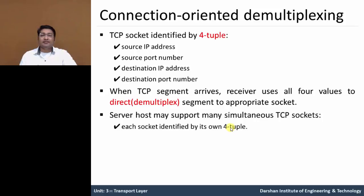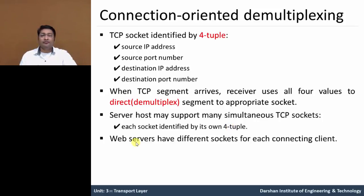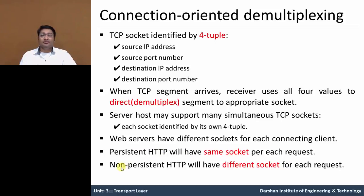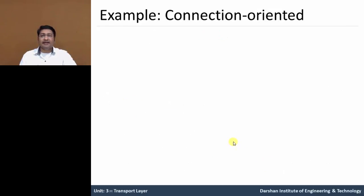Each socket is identified by its own four-tuple, so there is no need to mix them up. A web server has a different socket for each client. Many clients connect with one web server, and the web server has a different socket for each connecting client. This is like a persistent HTTP connection, because they use the same socket for each request. If non-persistent HTTP is used, then there is a different socket for each connection.